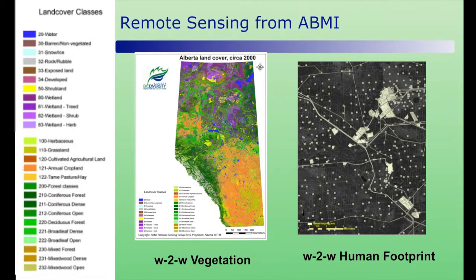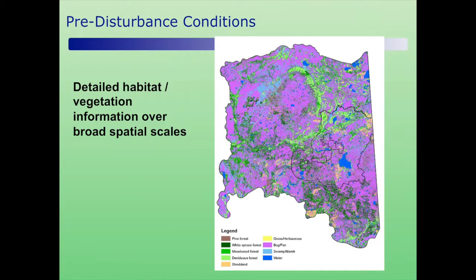The reason we were even thinking about this is that ABMI has quite a bit of information that could be used. There are reasonable maps of vegetation throughout Alberta and maps of human footprint throughout Alberta. These maps aren't perfect, but they're reasonable depictions of vegetation and human footprint. From that, you could predict for any given region what you expect for vegetation. The north part is Fort McMurray and the bottom is Lac La Biche on the east side toward Saskatchewan — this is what I'd call the Athabasca oil sands area.